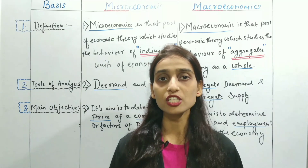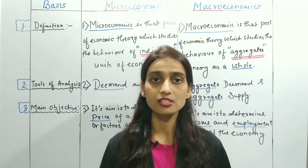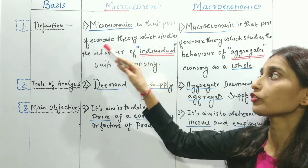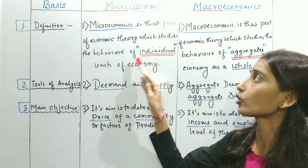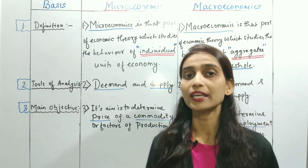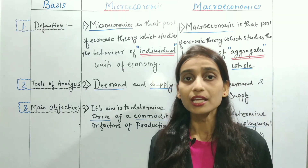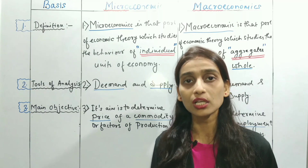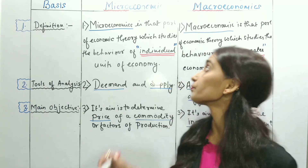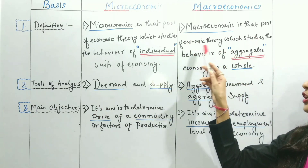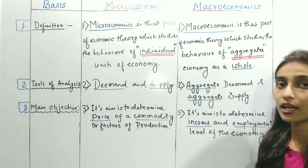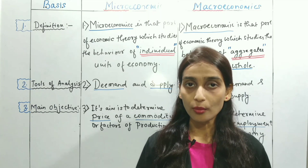Let's discuss the difference between micro and macroeconomics. The first difference is on the basis of definition. Microeconomics is that part of economic theory which studies the behavior of individual units of the economy. Macroeconomics is that part of economic theory which studies the behavior of the aggregate economy as a whole.